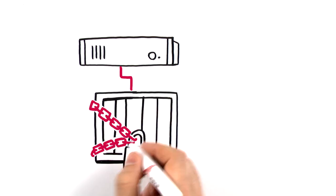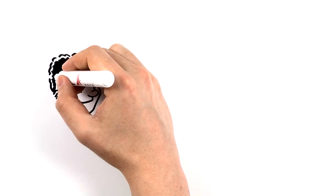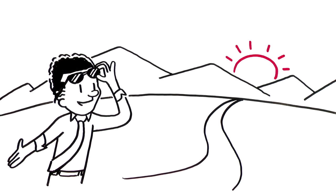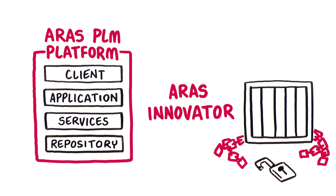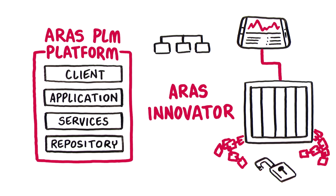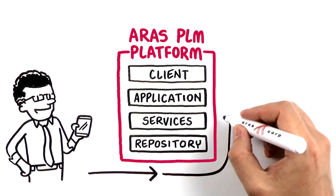The rigid architectures of legacy systems stifle innovation. It's time to see PLM in a whole new way. The Aras PLM platform is open, flexible, scalable, and upgradable. It allows companies to build an agile innovation layer that ties together disparate systems to connect people and product information across the enterprise.